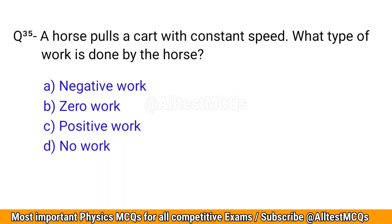Q35. A horse pulls a cart with constant speed. What type of work is done by the horse? The correct option is C: Positive work.